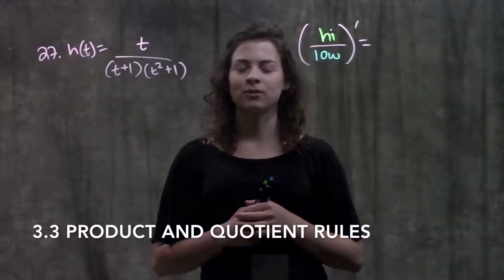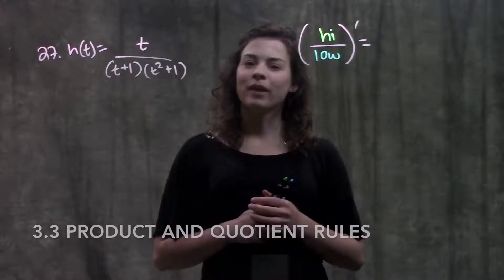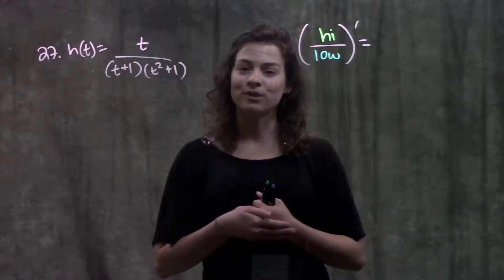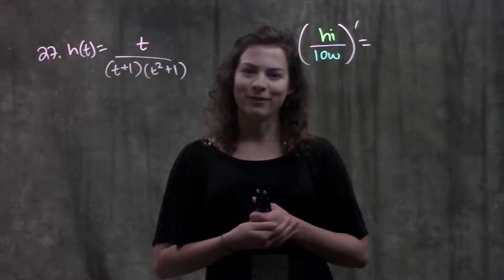This is section 3.3, product and quotient rules. In this video, we're going to go through example 27 in your book, and this is a problem where we'll have to use a quotient rule in order to take the derivative of this function.